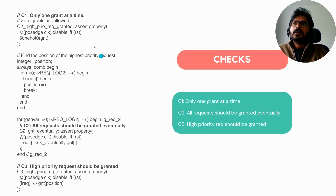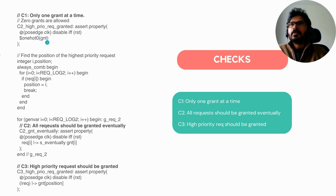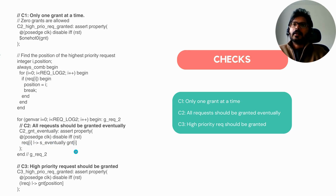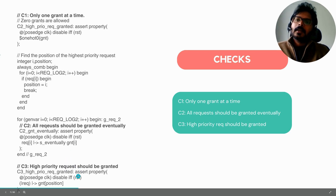The checks are: Check one — only one grant at a time, one-hot-or-zero, meaning it can have all zeros or at most one grant. Check two — all requests should be granted eventually: for each i, eventually grant i. And the final critical check — the high priority request should be granted.